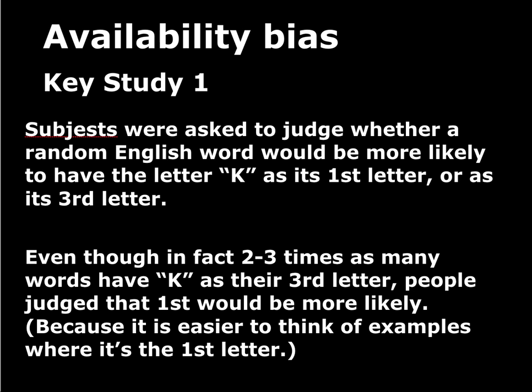Here's a classic study: subjects were asked to judge whether a random English word would be more likely to have the letter K as its first letter or as its third letter. In fact, there are two to three times as many English words with K as the third letter — like bake, make, take. But people judged first-letter K as more likely, because it's much easier to think of examples of words starting with K than words with K as the third letter. The ease of generating examples drove the probability judgment.